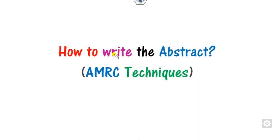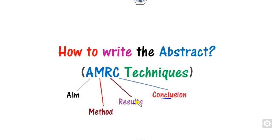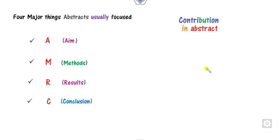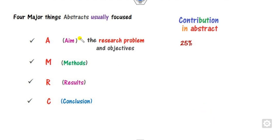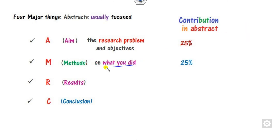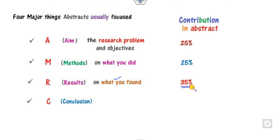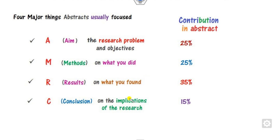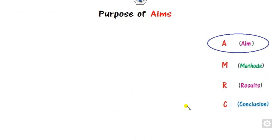How can you write the abstract? We will describe the AMRC technique. What is that? A is the Aim, M is Method, R is Results, and C is Conclusion. If you divide the whole abstract into 100 percent: the Aim — defining the research objectives and problem — should be about 25% (roughly 2 to 2.5 lines if your abstract is 10 lines). Method — what you did — consists of another 25%. Results — what you found — is the major portion at 35%. And the Conclusion — the implication of the result — consists of the remaining 15%.